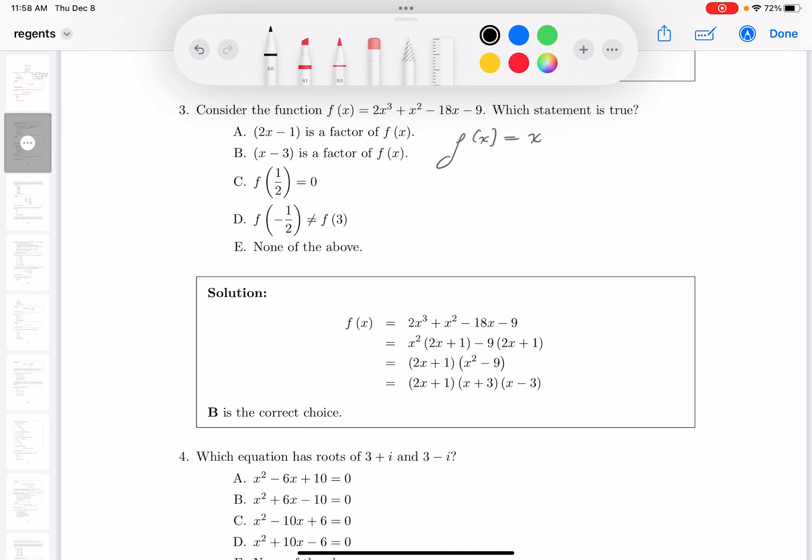So I see x squared, and then what do you see? You would see 2x plus 1 minus 9, 2x plus 1. I get 2x plus 1, x squared minus 9.